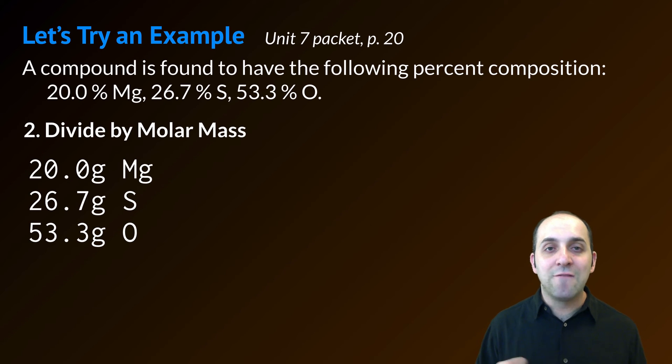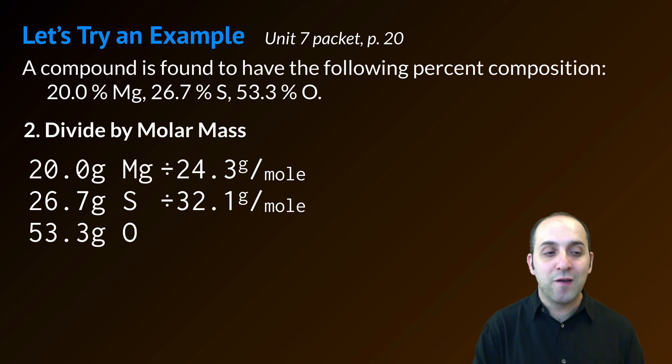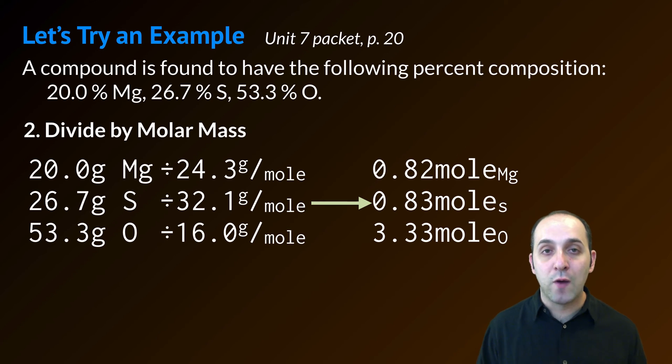Now that I know that, I can figure out the mole ratio by dividing each of these by its molar mass. 20.0 grams divided by 24.3 grams per mole for magnesium, 26.7 grams of sulfur divided by 32.1 grams per mole for sulfur, and 53.3 grams for oxygen divided by 16.0 grams per mole for oxygen. Once I do that, I have my mole ratio.